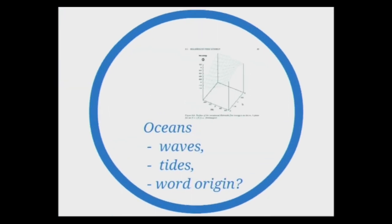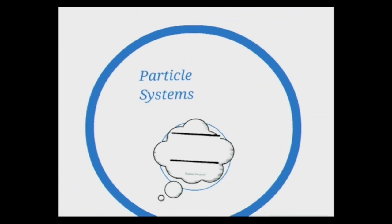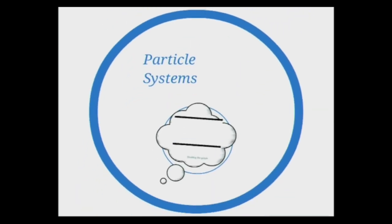Oceans have waves and tides. Particle systems can also be explained in waves. For example, when you shake a connected graph, you're actually perturbing the coordinates of all the other nodes associated with that item.